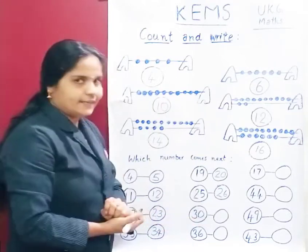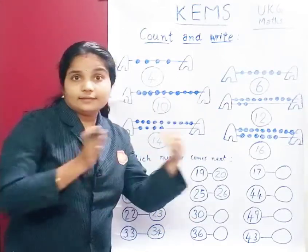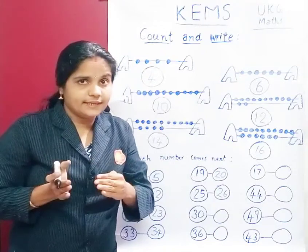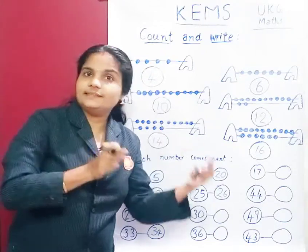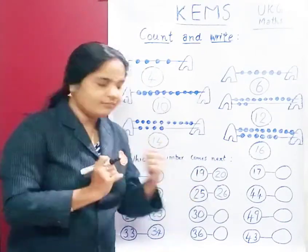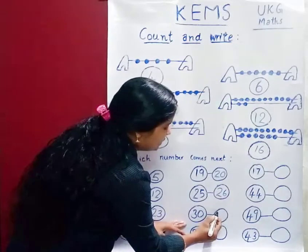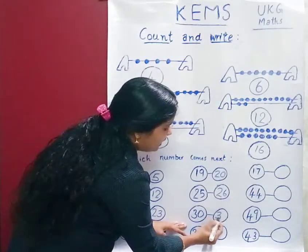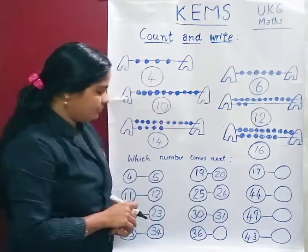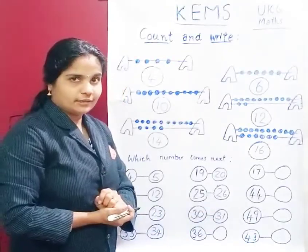Then 30. Next number after 30. 30, 31. Write 3, 1 — 31. 30, 31.